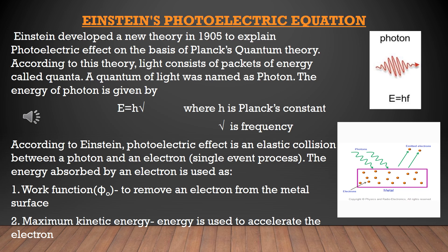Every photon is associated with an energy equal to h times nu, where h is Planck's constant and nu is the frequency. According to Einstein, photoelectric effect is an elastic collision between a photon and an electron. That is, when one photon is incident on a metal surface, one electron is emitted. If two photons are incident on a metal surface, two electrons are emitted. It is a single event process — one photon, one electron is emitted.